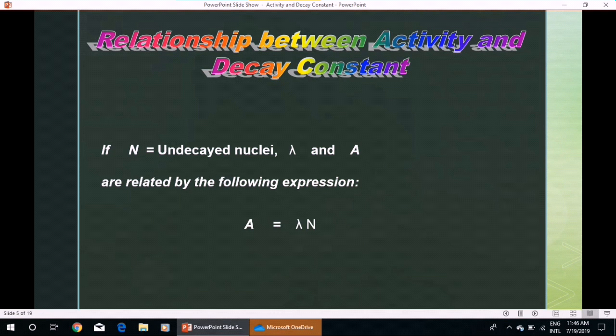Relationship between activity and decay constant: if N is the number of undecayed nuclei, λ and A—that is, decay constant and activity—are related by the following expression: A = λN.